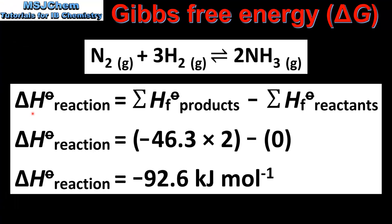Next we will calculate the standard enthalpy change for the reaction. The enthalpy change of the reaction is equal to the sum of the standard enthalpy change of formation values of the products minus the sum of the standard enthalpy change of formation values for the reactants. This gives us a standard enthalpy change of negative 92.6 kilojoules per mole.